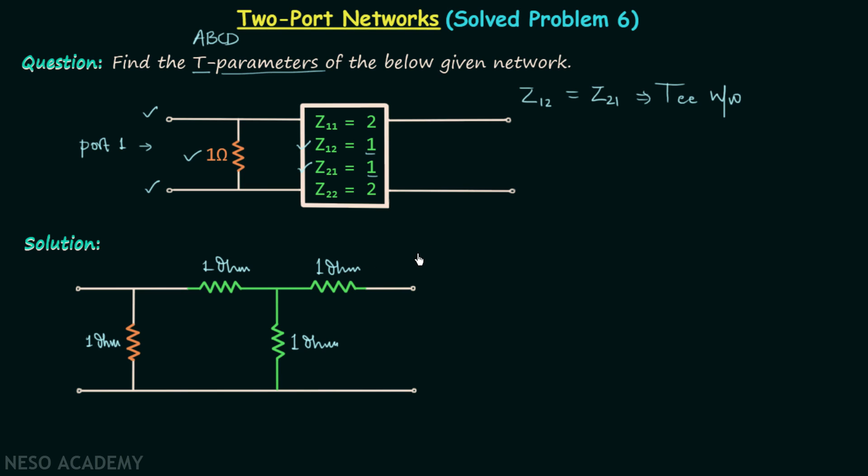Now moving on to the next step, we will divide the larger two port network into small two port networks like this. And in this way we have 1, 2, 3, and 4 two port networks connected in cascade.